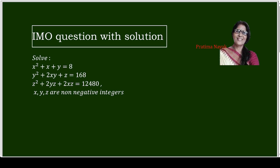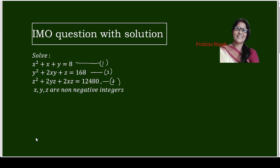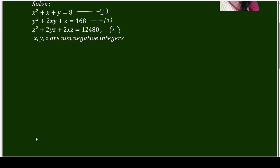The question is: solve the system — first equation: x² + x + y = 8; second equation: y² + 2xy + z = 168; third equation: z² + 2yz + 2xz = 12480. There are three equations and the condition that x, y, z are non-negative integers.